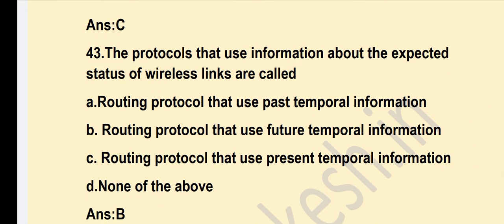The protocol that uses information about the expected status of wireless links is called? Option B — Routing protocol that uses future temporal information — is the correct answer.